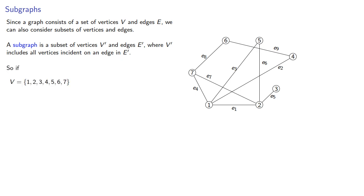If our graph consists of vertices and edges, we can take some subset of vertices and edges. The key requirement is that if we have an edge in our subgraph, we have to include the incident vertices.